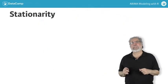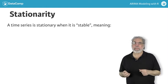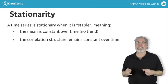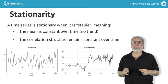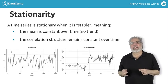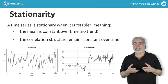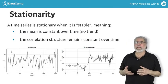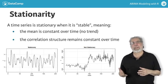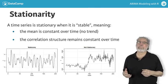In the context of time series, stationarity refers to the stability of the mean — that is, there's no trend — and stability of the correlation — that is, the correlation structure of the data remains constant over time. The time series plotted here may help in understanding stationarity better.